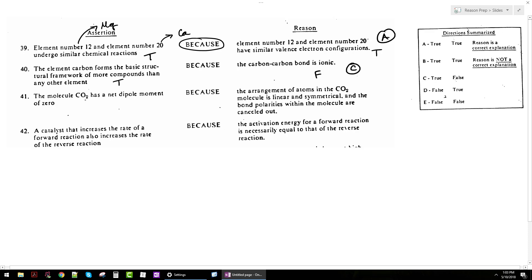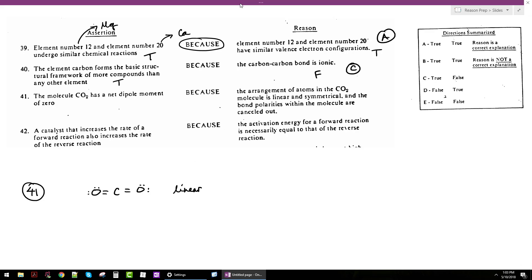Question 41: the molecule CO2 has a net dipole moment of zero. Drawing the structure with the electrons, we see this is linear. It's sp hybridized at the carbon atom. We get a linear structure because there's no unpaired electrons around the central carbon atom.